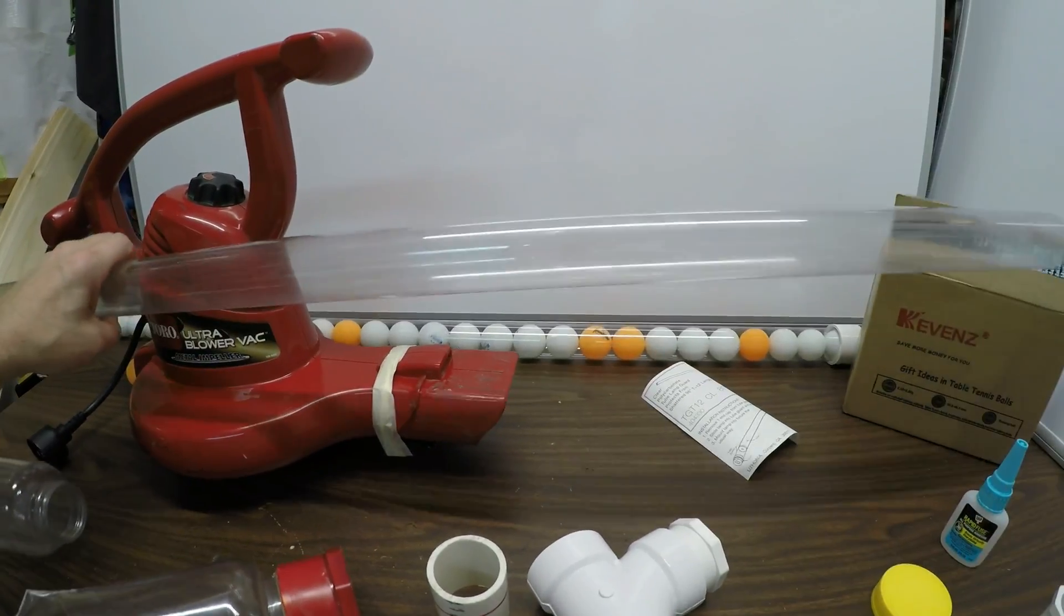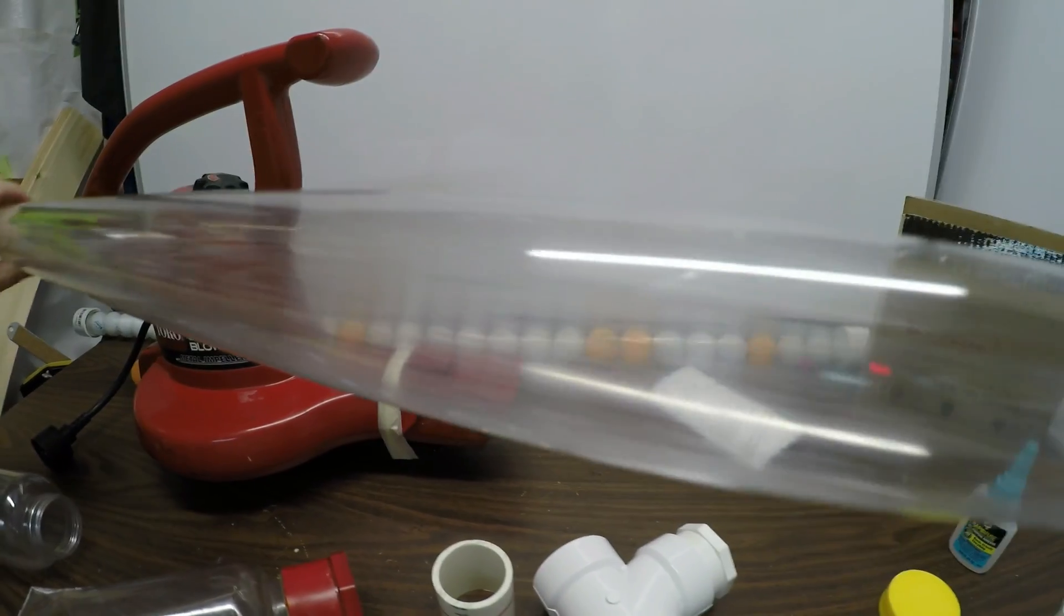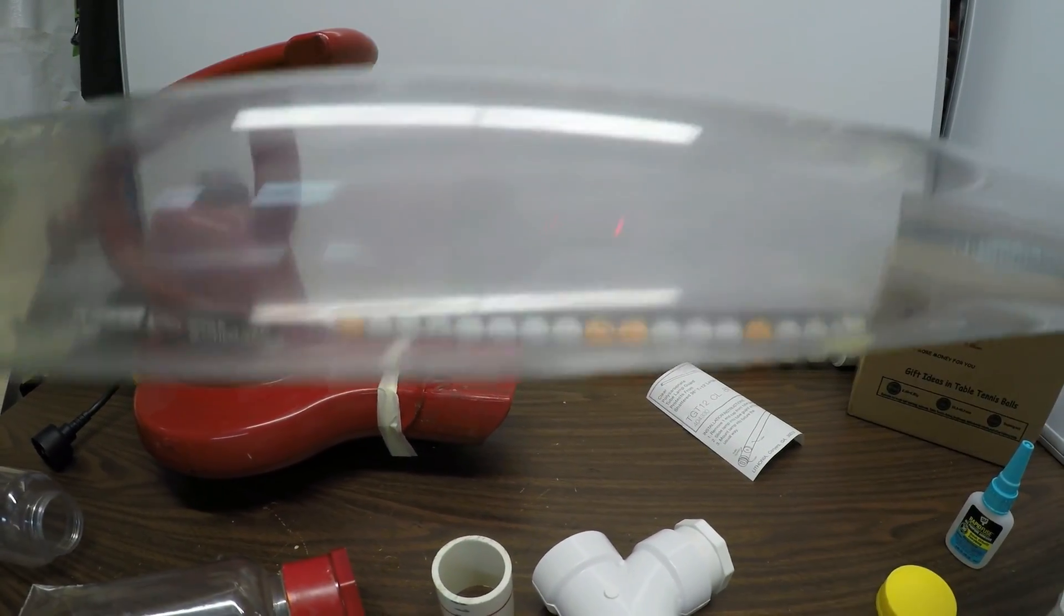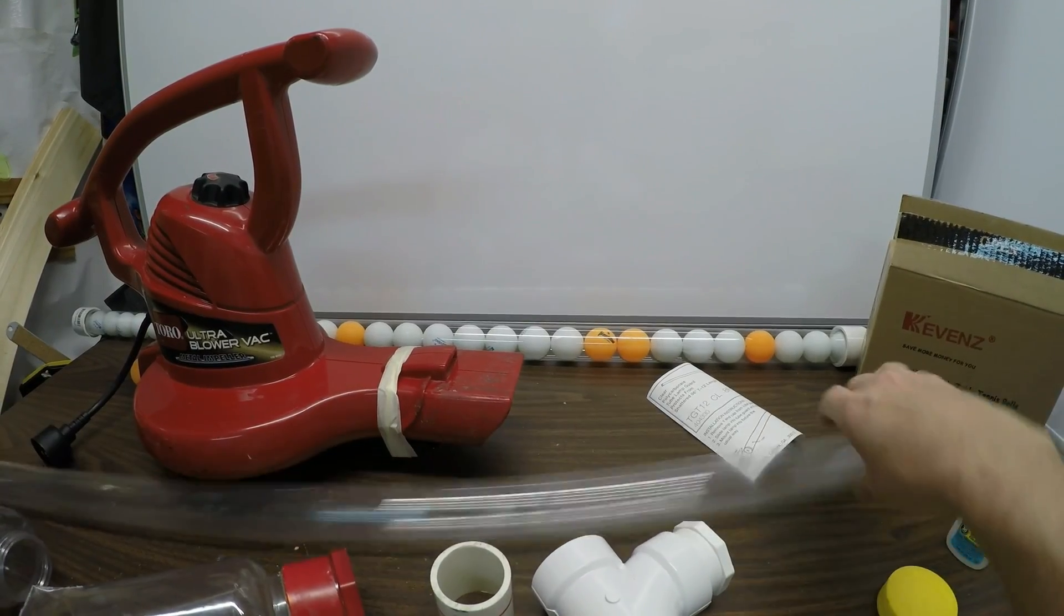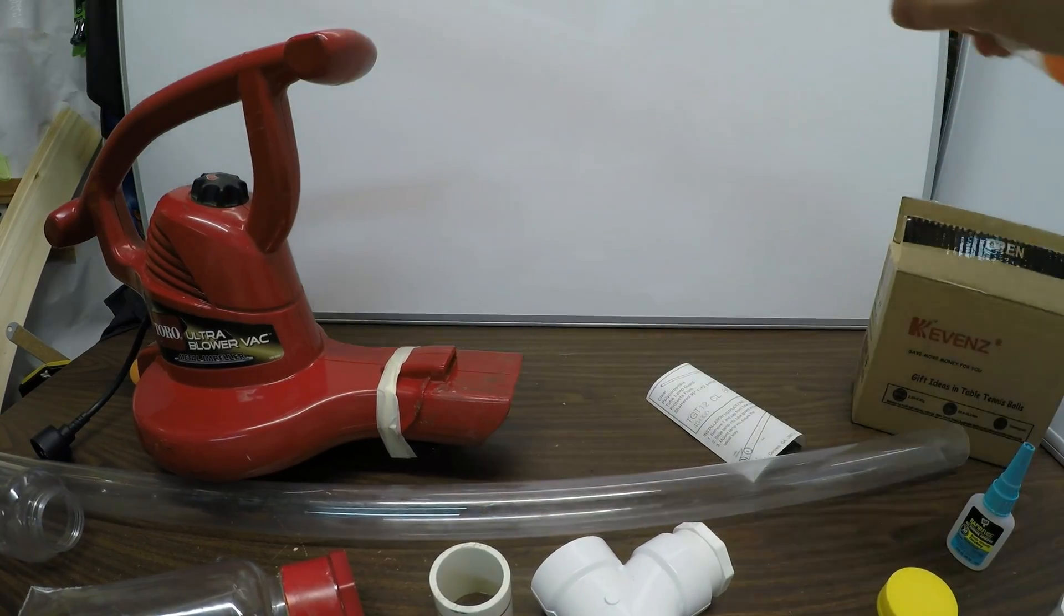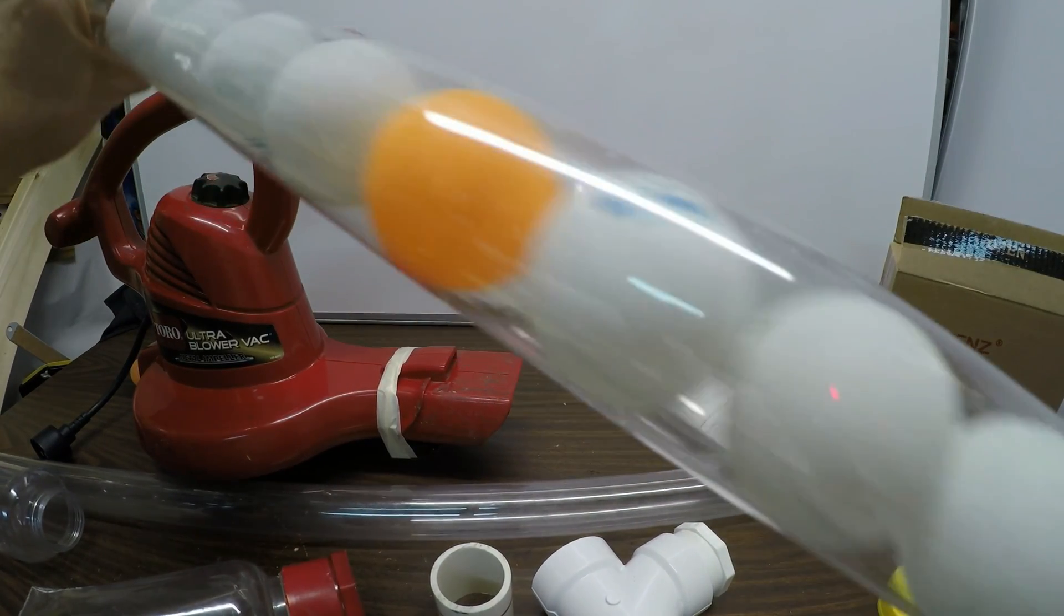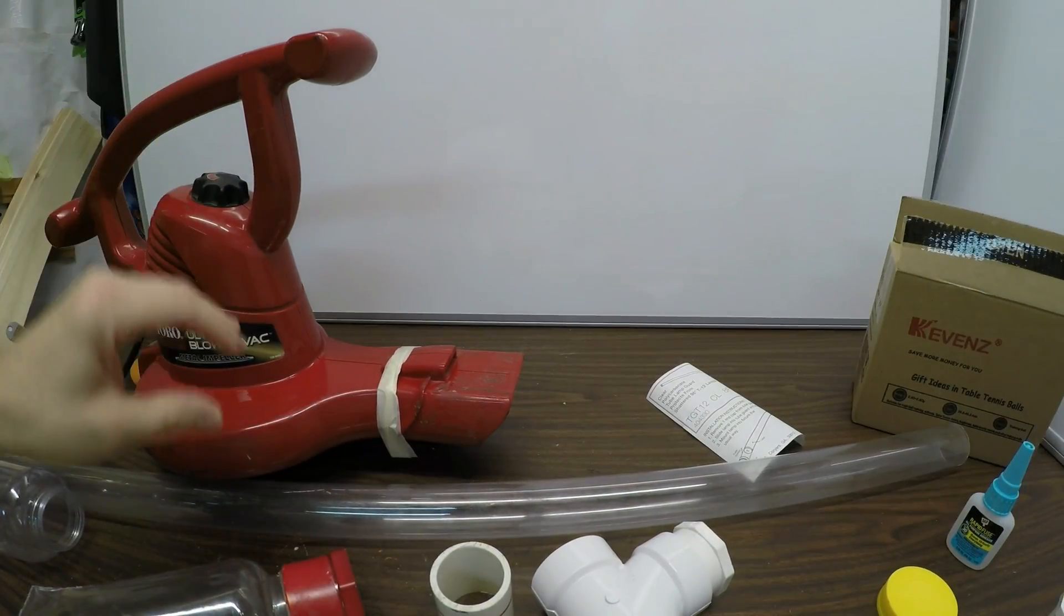So this section here, the actual barrel of the cannon is 44 inches. And then that allows me to have the canister section or the ammo section that goes on top.